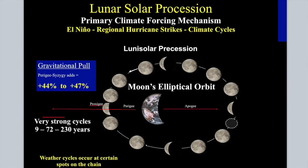When you have these factors, your gravitational pull can increase by as much as 47% above the normal gravitational tug on the Earth. So how often would you expect those two things to combine? I can see where it can add 44% to 47% gravitational pull. How often does that 44% to 47% number actually happen?